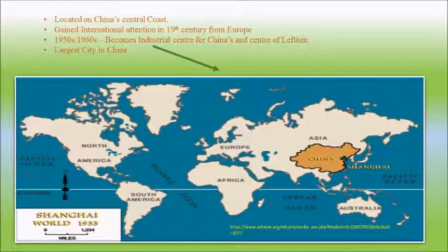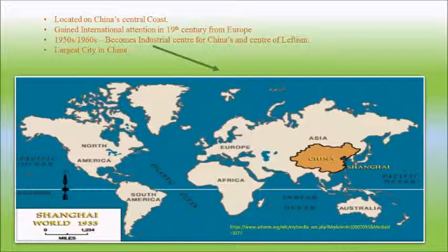Shanghai is a city which is located on the central coast of China. It is the most popular city in the country and it gained international attention during the 19th century from European countries. During the 1950s to the 1960s, Shanghai became an industrial center for China's industries since it had a large amount of skilled workers. It is currently the largest city in China and it is vital for China's future commercially, economically and financially.